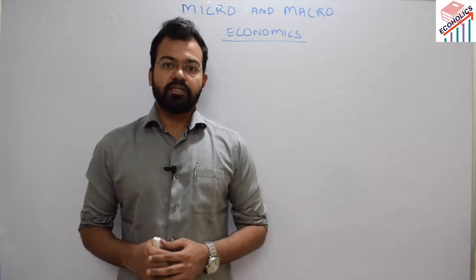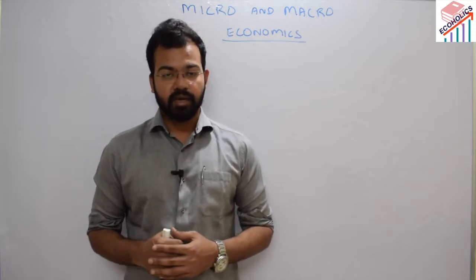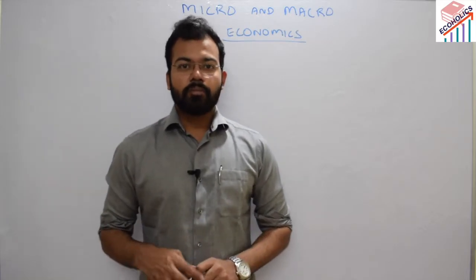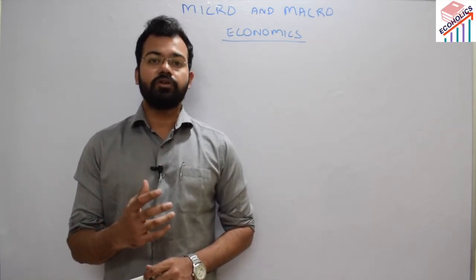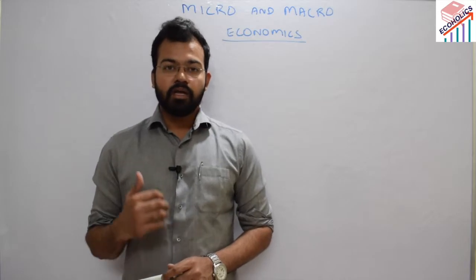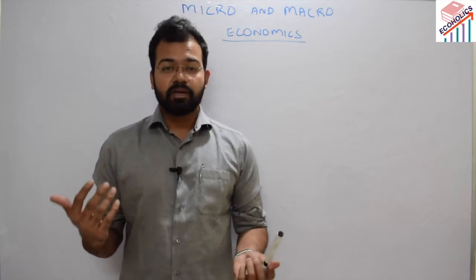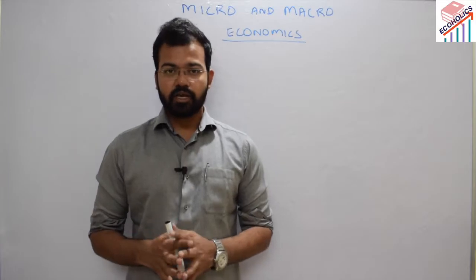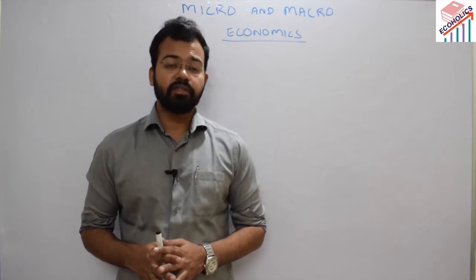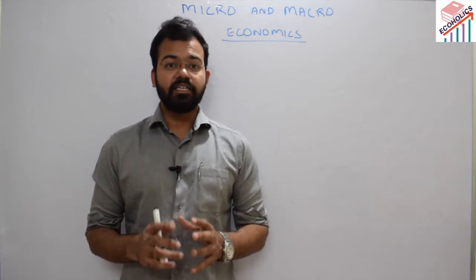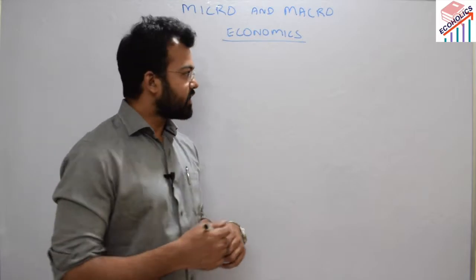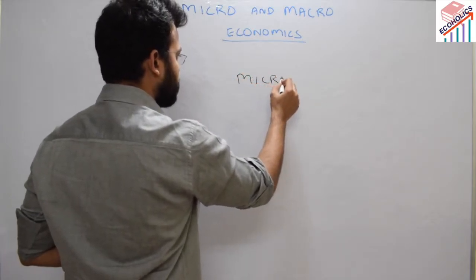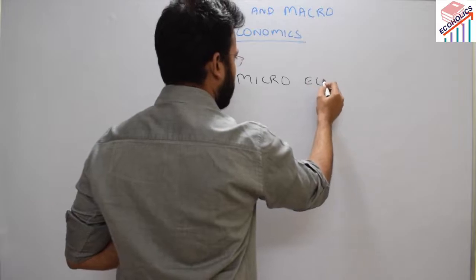In simple terms, microeconomics deals with individual industries, individual firms, the wages determined for labor, and the prices of a commodity. It operates at a micro level, focusing on individual units. We can draw a flowchart to illustrate the structure of microeconomics.